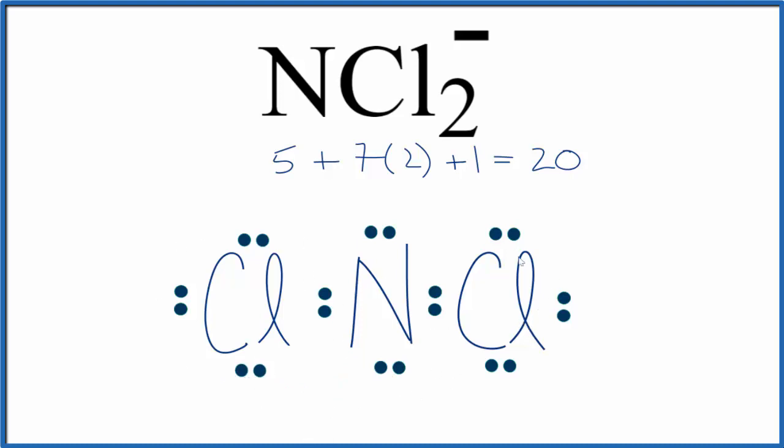Each of the atoms has an octet, so this is the Lewis structure for NCl2 minus. We should put brackets around it, and then put a negative sign on the outside, since we have an ion.